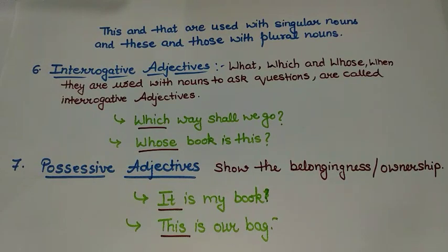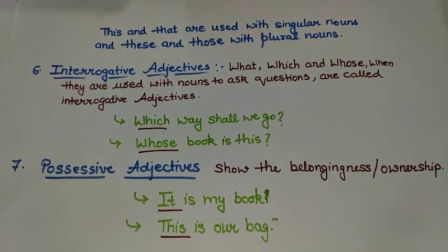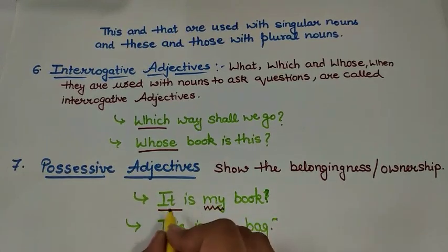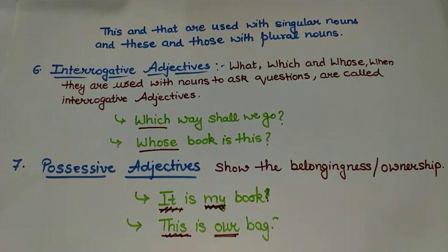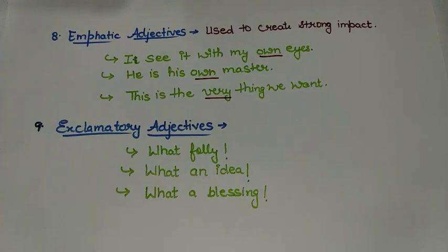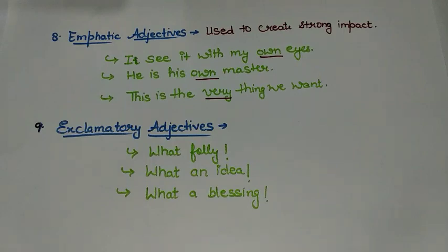The next one is possessive adjectives. Possessive adjectives show the belongingness or the ownership. Like, 'It is my book' — the word 'my' is showing the possessiveness here. 'This is our bag.' The words 'my' and 'our' are used to show possessive adjectives. The next adjective is emphatic adjectives. These adjectives are used to create a strong impact of something. Like, 'I see it with my own eyes' — the word 'own' is pressurizing and creating a strong impact. Similarly, 'He is his own master.' 'This is the very thing we want.' These words are used to create pressure on something.